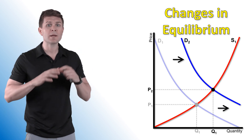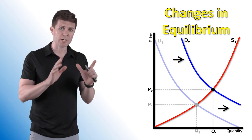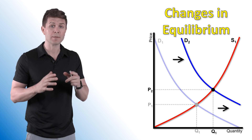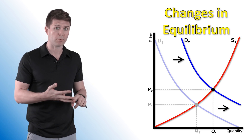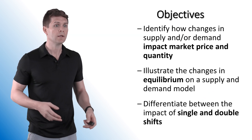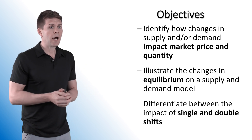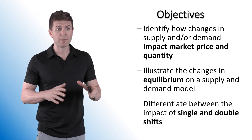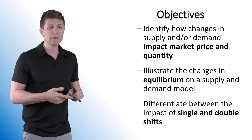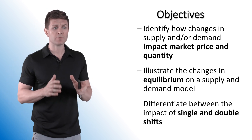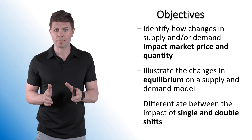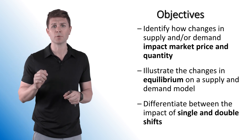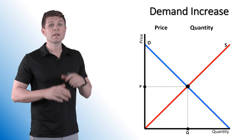Welcome back to econ class. Today we're going to be looking at changes in equilibrium — how shifts in supply and demand can impact the equilibrium price and quantity. Today's objectives: identify how changes in supply and/or demand impact market price and quantity, illustrate the changes in equilibrium on a supply and demand model, and differentiate between the impact of a single and double shift of the demand and supply curve.